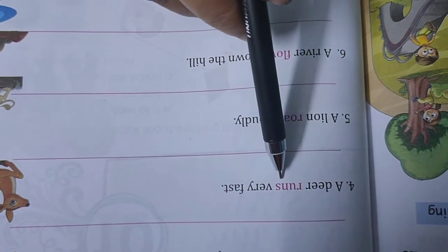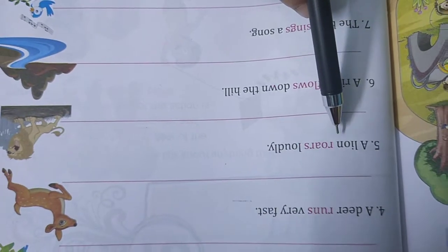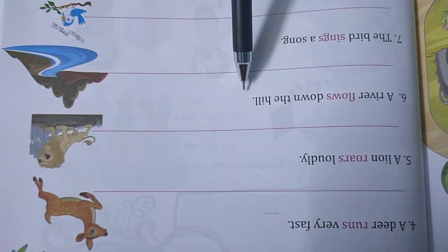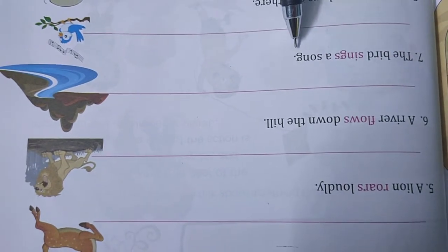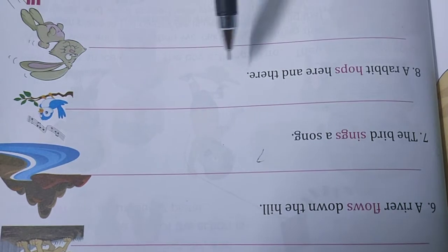A deer is running very fast. A lion is roaring loudly. A river is flowing down the hill. The bird is singing a song. A rabbit is hopping here and there.